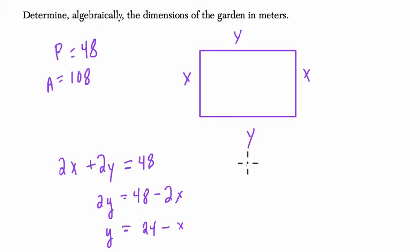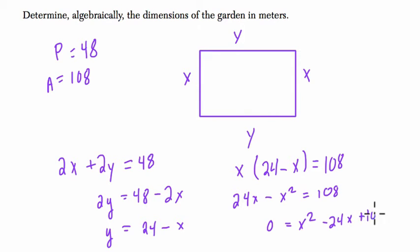So then the area is 108. So x times y, which is 24 minus x, equals 108. So let's distribute the x here and see if we can do anything. We have 24x minus x squared equals 108. So if I add the x squared over and subtract the 24x, I'll get 0 on this side, and I'll have x squared minus 24x plus 108.